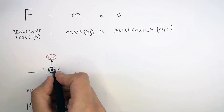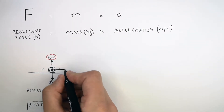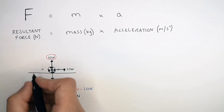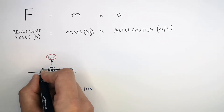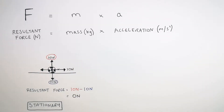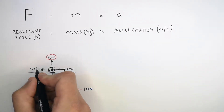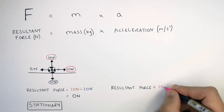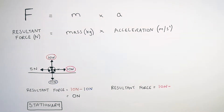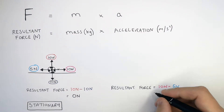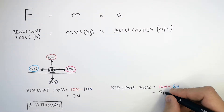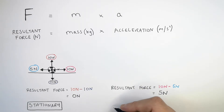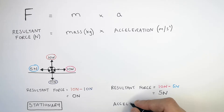However, what happens if we apply a forward force on the ball of 10 newtons? There is going to be a drag force acting on the ball due to air resistance and friction, which will be 5 newtons. So the resultant force is going to be 10 newtons forwards minus the 5 newtons drag force, giving a resultant force of 5 newtons forwards. Because the forces aren't balanced and there is a resultant force, the ball is accelerating.